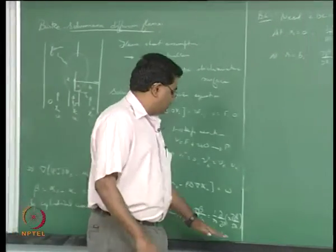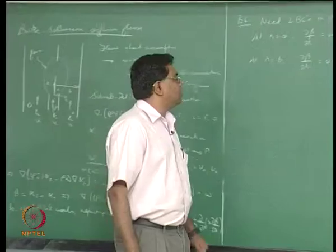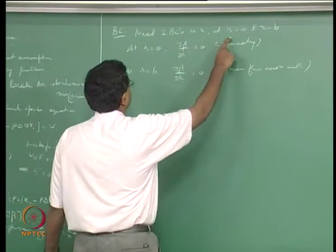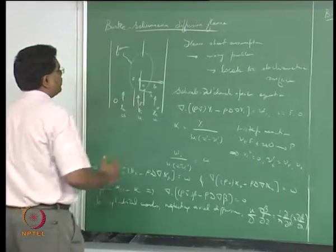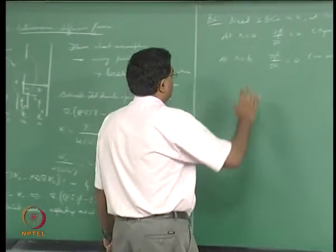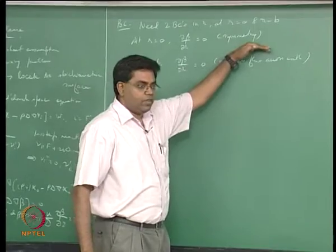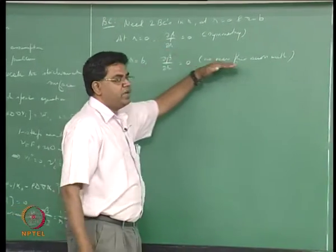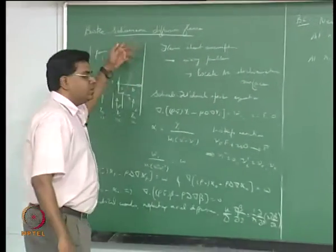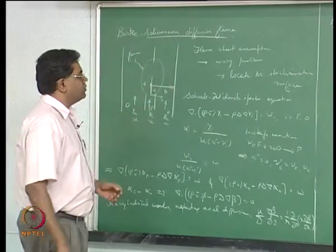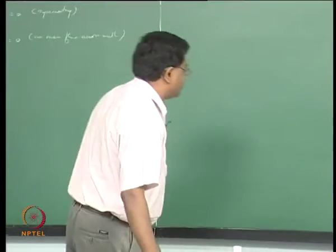We need two boundary conditions for beta in R: at R=0 (the centerline) and R=B (the outer duct radius). At R=0 we require a Neumann condition for symmetry, and at R=B we require a no-mass-flux condition since the wall is rigid and non-porous. Both are first-derivative boundary conditions.